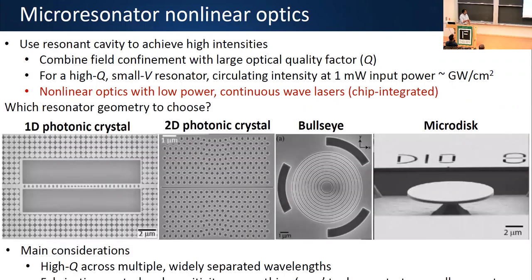There are lots of different resonators one can think about — one-dimensional and two-dimensional photonic crystals, grating cavities, and different types of whispering gallery cavities. We care about key considerations: if we're doing frequency mixing and frequency conversion, we need high cavity quality factors at all the different widely separated wavelengths to give us resonant enhancement everywhere. We also need a certain sweet spot in terms of fabrication control and sensitivity — sensitive enough that geometry changes give us changes in what colors we generate, but not so sensitive that unavoidable fabrication errors lead to fluctuating results.